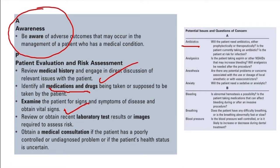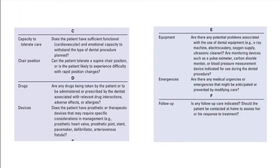Then consider bleeding — is abnormal hemostasis a possibility? This is determined by history taking. Is the patient taking any medications that can affect bleeding after an invasive procedure? Then breathing — does the patient have any difficulty breathing? Is the patient asthmatic, or is breathing abnormally fast or slow? Then blood pressure — is it well controlled and how likely is it to increase or decrease? Then the patient's capacity to tolerate care — does the patient have sufficient functional cardiovascular and emotional capacity to withstand dental procedures? Some patients get overwhelmed; you must be familiar with white coat syndrome.